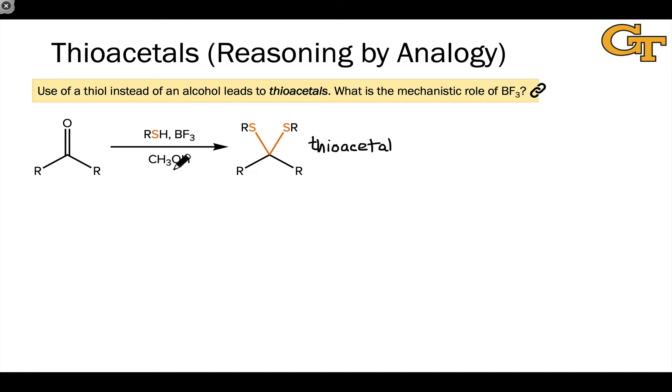Instead of a Bronsted acid, which would lead to acetal formation, we're using BF3. What is the mechanistic role of BF3? If we look at its Lewis structure, the key to boron trifluoride is that it contains a central boron atom with a six-electron valence shell. It's an electron-deficient boron atom. This is a Lewis acid.